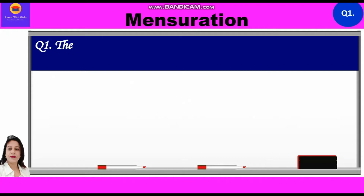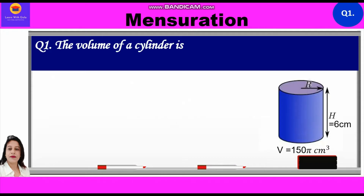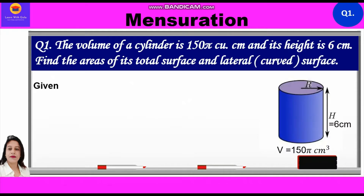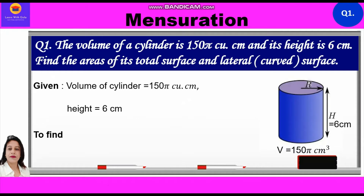Now let's take up question number one. The volume of a cylinder is 150π cubic centimeters and its height is 6 centimeters. Find the areas of its total surface and lateral surface. Given: volume of cylinder = 150π cm³, height = 6 cm. We have to find the total surface area and curved surface area.